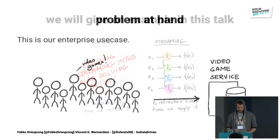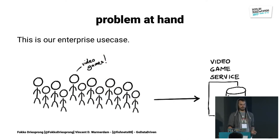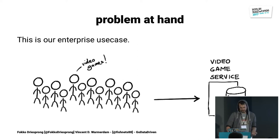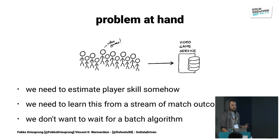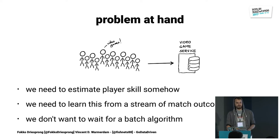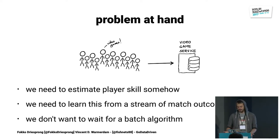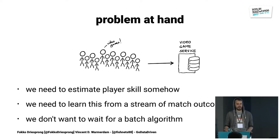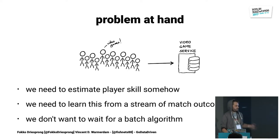Let's talk about our enterprise use case. We'll pretend that we're some sort of video game company, and there's some queue of people who really want to go and play these video games. There are a couple of things that immediately become a problem, because you want these players to play against people of the same skill level. If you are a super noob and the other guy is super awesome, they're both going to have a bad time.